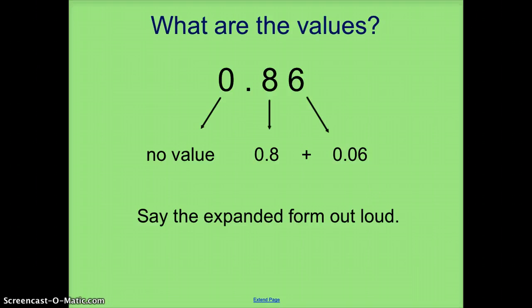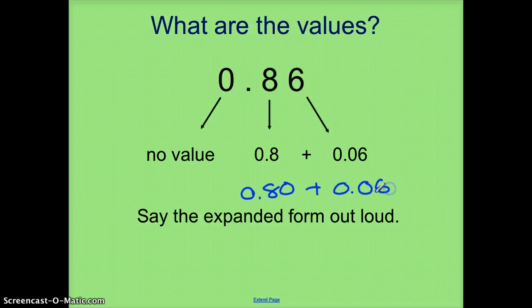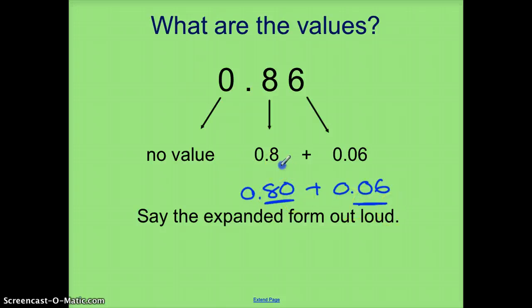A common misconception is to think that if I'm doing expanded notation, it might be 80 100ths plus 6 100ths — and that would mean that both of these were represented as 100ths. Whenever we do expanded notation, we want different place values. So instead of 100ths plus 100ths, we're going to do 10ths plus 100ths.